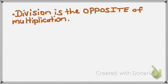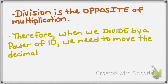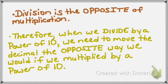As we know, division is the opposite of multiplication. In this lesson, we need to remember that when we divide by a power of 10, we'll need to move the decimal the opposite way that we would if we multiplied by a power of 10. So when we divide by a power of 10, we move the decimal the opposite way we would if we multiplied.